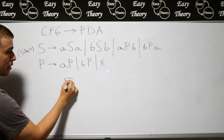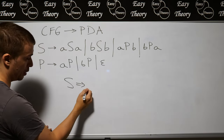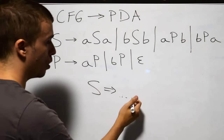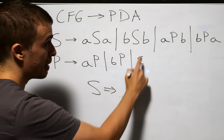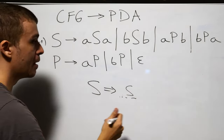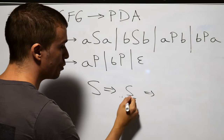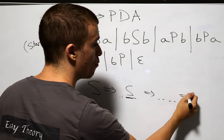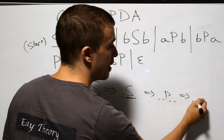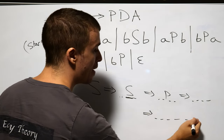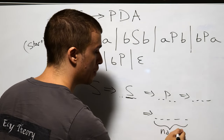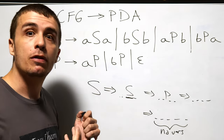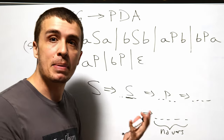We start with the start variable and then we apply a rule — this double arrow means apply a rule — so we get something on the right-hand side. Then maybe there's an S in here, and we apply some rule to that S, and we may have another variable like P, and we just keep going until we arrive at some string which has no variables whatsoever in it. The language of the grammar is the set of strings that have no variables in them.